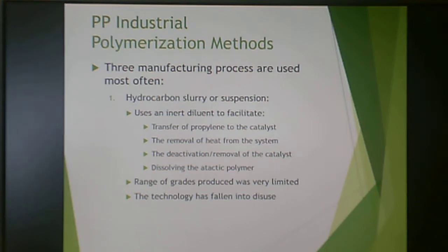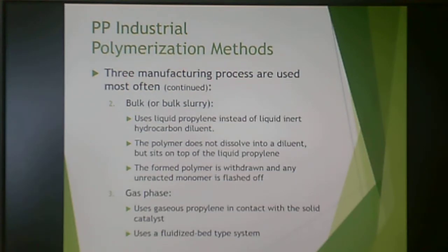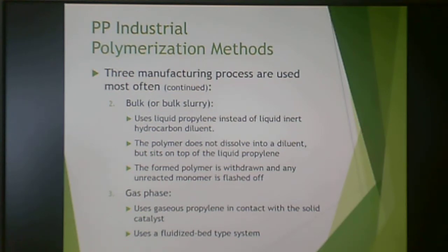This hydrocarbon slurry process isn't used very much anymore. Then you often have the bulk or bulk slurry process. This uses liquid polypropylene instead of a liquid inert hydrocarbon. The polymer doesn't dissolve into the diluent but sits on top of it, and then the polymer can be pulled off while the unreacted monomer is flashed off because it's a gas.